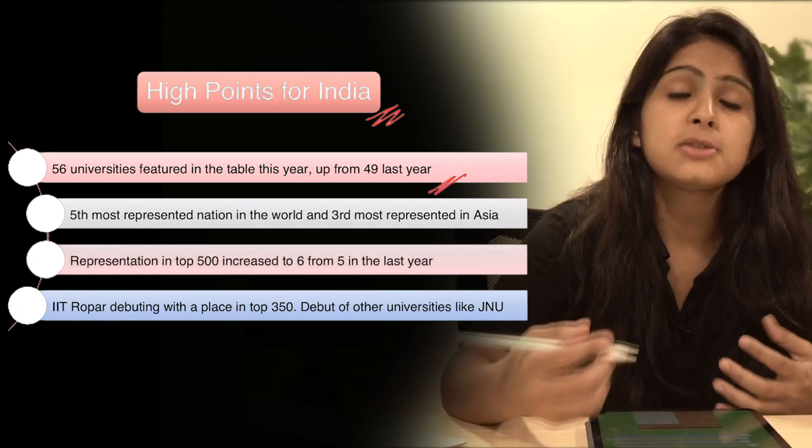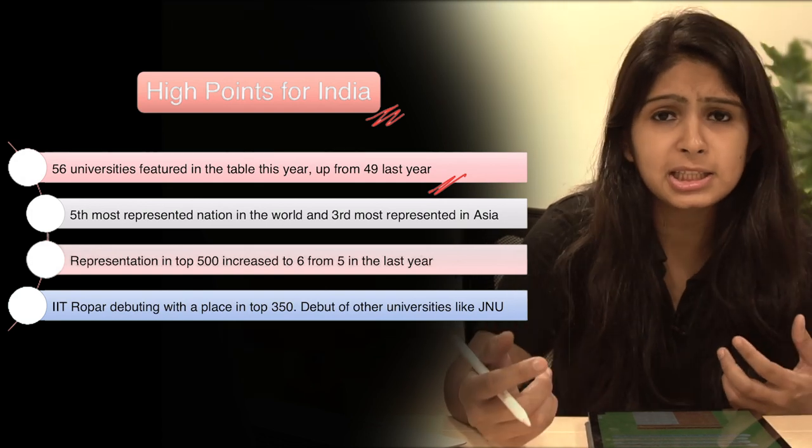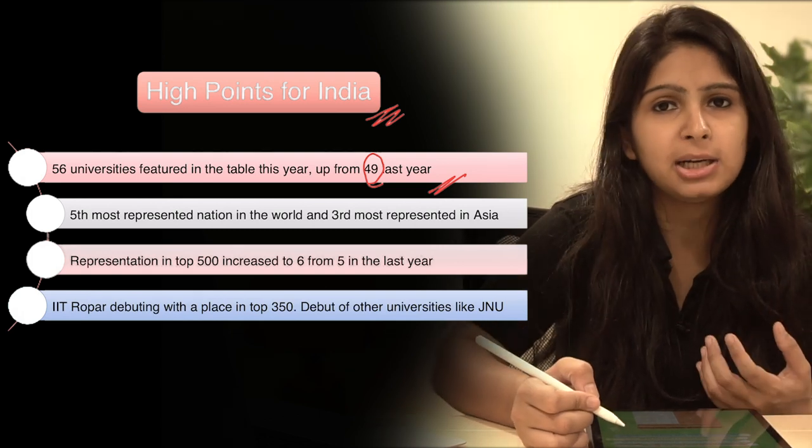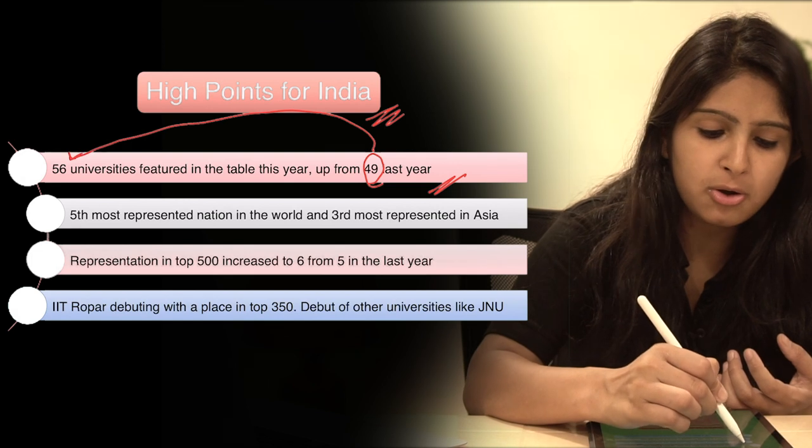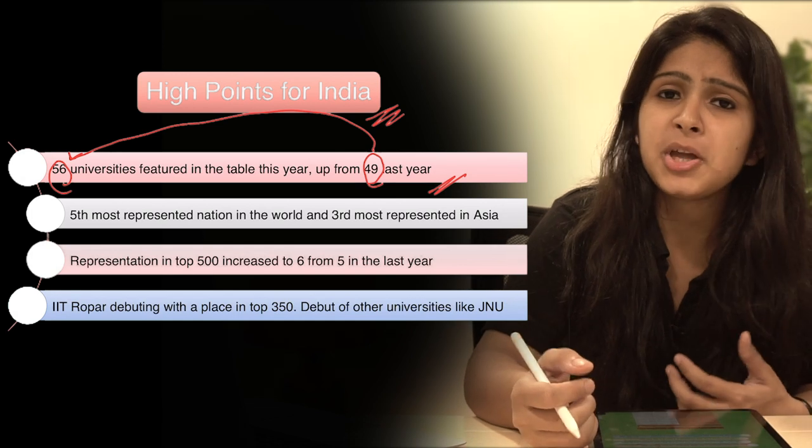So the first point is, last year when Times Higher Education's world university ranking came, at that time 49 Indian universities were part of this ranking. But now this year this count has increased to 56. So this can be considered as a happy news for India.